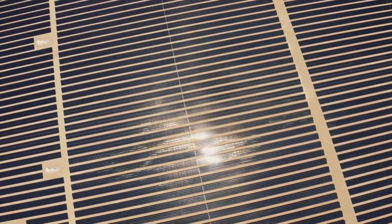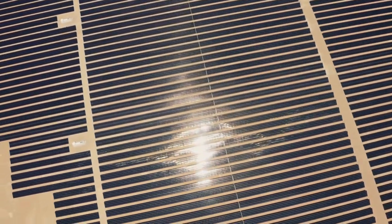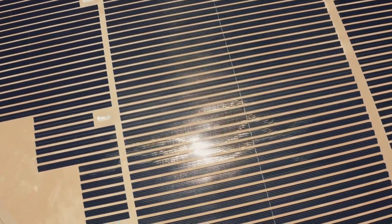This phenomenon, known as photoconductivity, finds widespread applications, most notably in solar cells. Solar cells convert sunlight into electricity by generating electron-hole pairs, increasing conductivity, and enabling current flow.